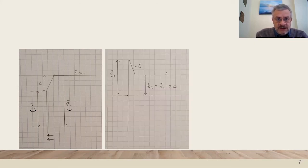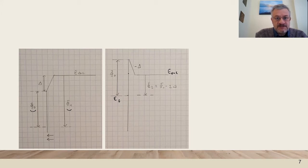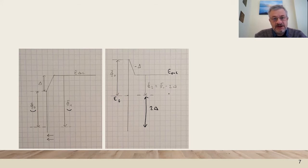What happens if we change the sign of the surface dipole? Then we take as a reference the external vacuum level at the surface, because the work function is the difference between the surface vacuum level and the Fermi energy. Since the step towards the inside is outwards, the effective work function is decreased, and there will be a final total change of the work function which is twice the dipole energy.